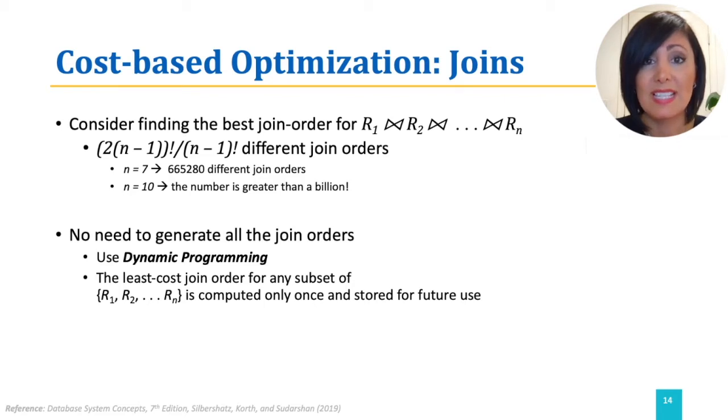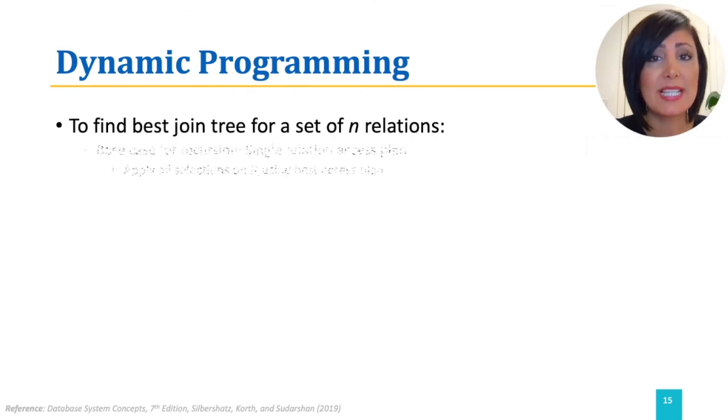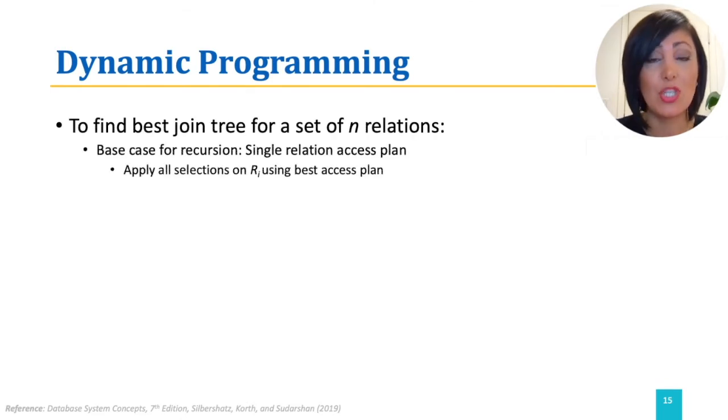Using this simple idea, we can develop a dynamic programming algorithm for finding optimal join orders. In the dynamic programming approach, we should decide a base case, which is a single relation access plan. For a single relation access plan, we apply a selection on the single relation Ri, using the best access plan, which might be the best choice of index on the relation Ri, or a scan.